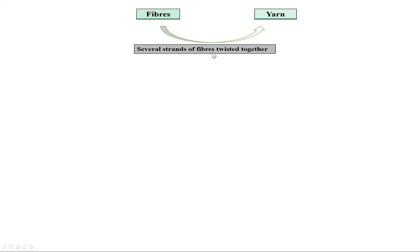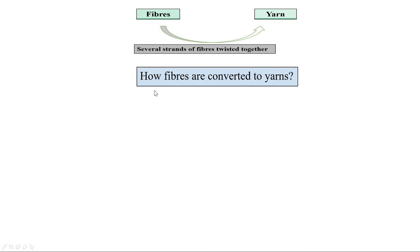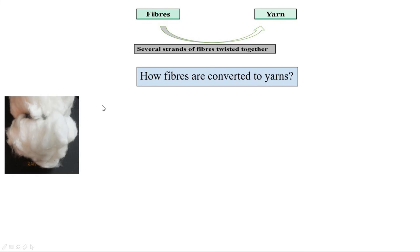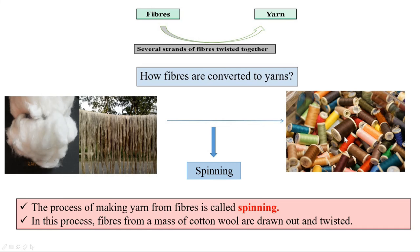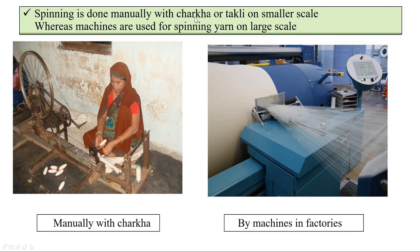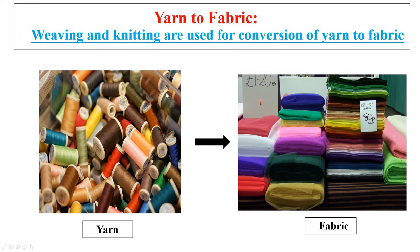We already know that several strands of fibers twisted together make yarn. But how are fibers obtained from plants, animals, or chemicals converted into yarns? The answer is spinning. The process of making yarn from fibers is called spinning. In this process, fibers from a mass of cotton or wool are drawn out and twisted. Spinning is done manually with a charkha or takli on a smaller scale, whereas machines are used for spinning yarn on a larger scale.